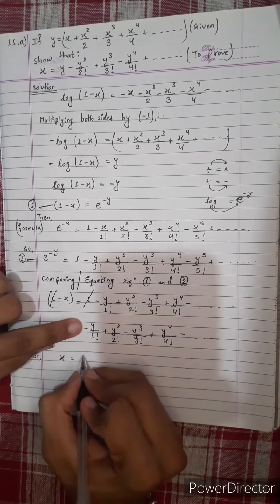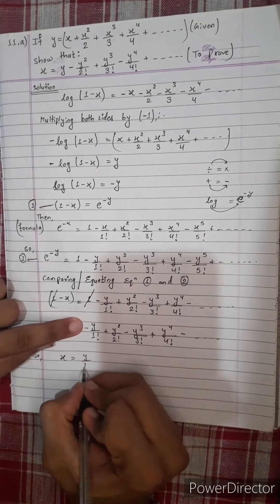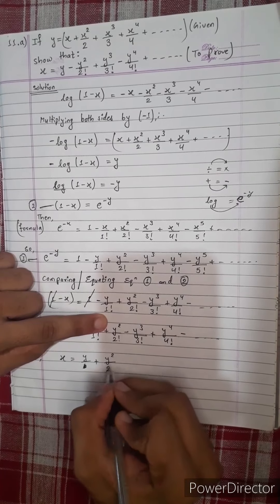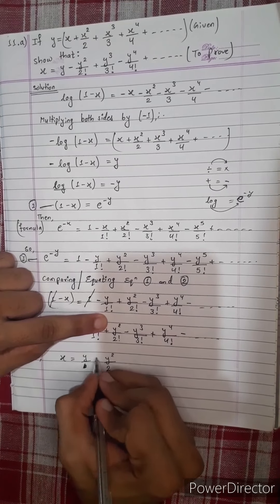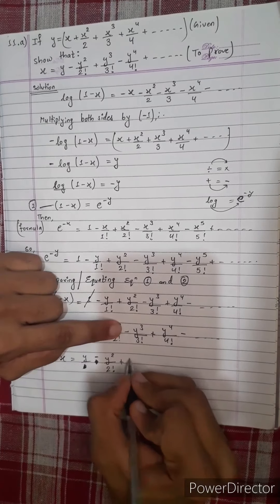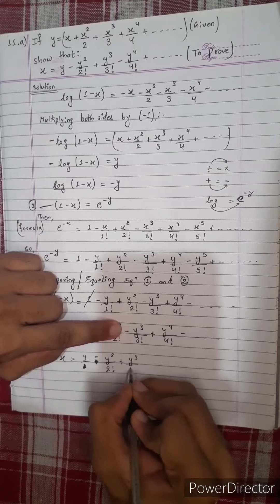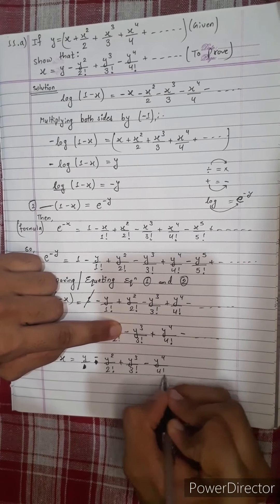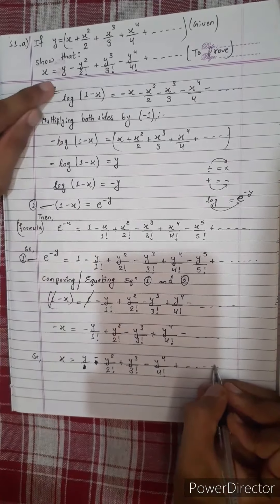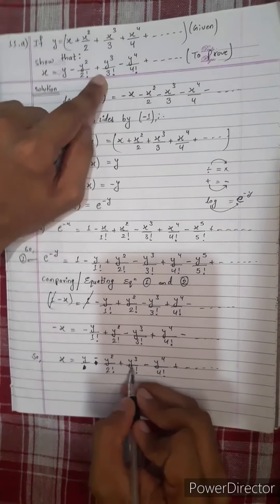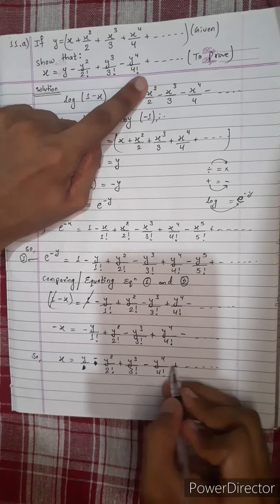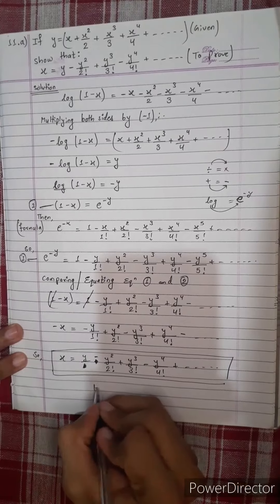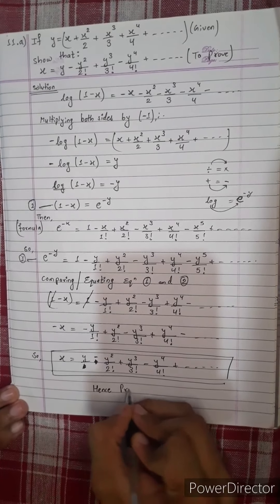So x equals y by 1 factorial minus y squared by 2 plus y cubed by 3 factorial minus y to the power 4 by 4 factorial plus dot dot dot, which simplifies to x equals y minus y squared by 2 plus dot dot dot. Hence proved.